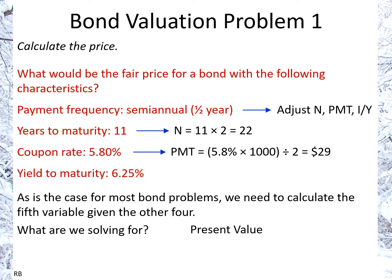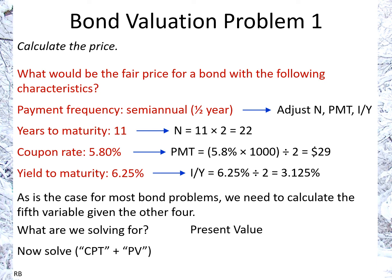Finally, the yield to maturity relates to I/Y on your calculator. We're looking at an APR of 6.25%, but since we're dealing with semiannual coupons, we adjust to the rate per period — half of that rate. So 6.25 divided by 2 gives us 3.125%. We enter 3.125 (without the percent sign) into the BA2 Plus as I/Y. Then we press CPT (compute) and then PV, which gives us a result of PV equals minus 964.59.